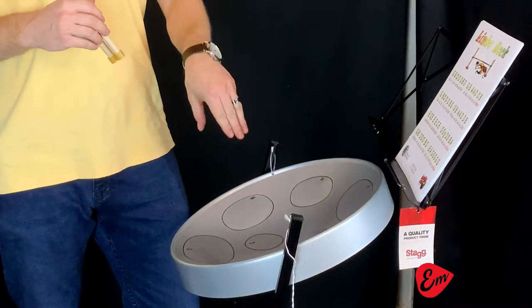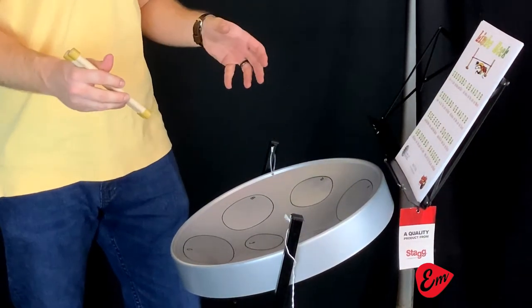Hey guys, it's John from Everything Musical and I'm very excited today. We just got in this new Jumby Jam, which is basically a youth version of a steel drum. This particular one is in the key of G.